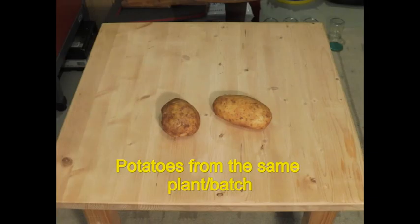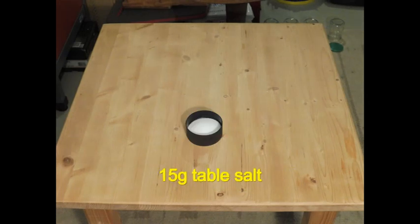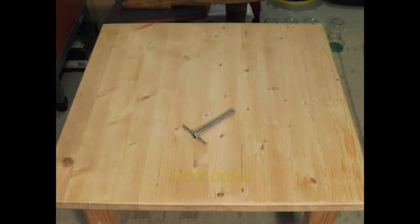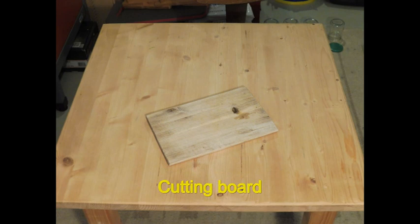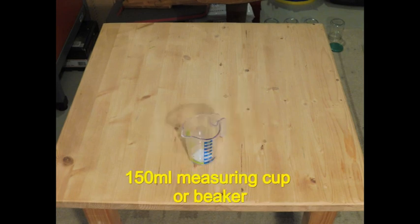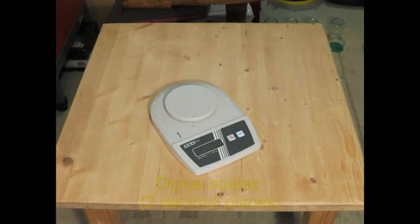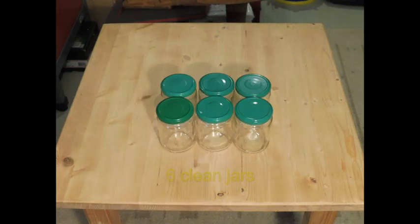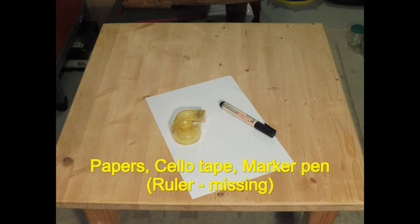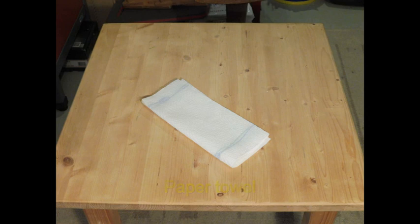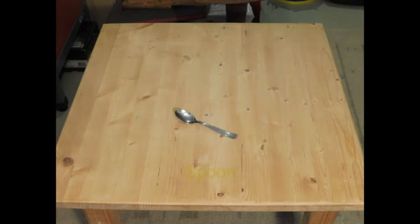You will need two potatoes, salt, water, cork borer, cutting board, measuring cup, a knife, digital scales, six jars, some stationeries, paper towel, and a spoon.